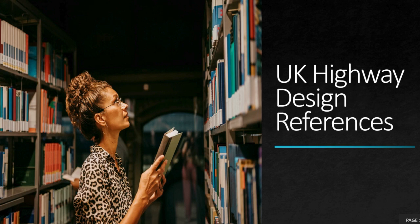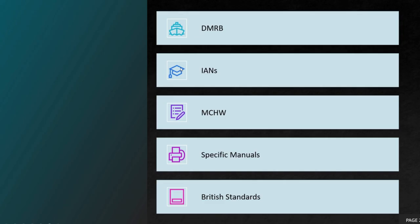Hello, welcome to Civil Highways. In this video I am going to discuss UK highway design references — the important things we need to refer to while doing highway designs, especially for UK roads. The list includes: DMRB, IAN, MCHW, specific manuals, and British Standards.